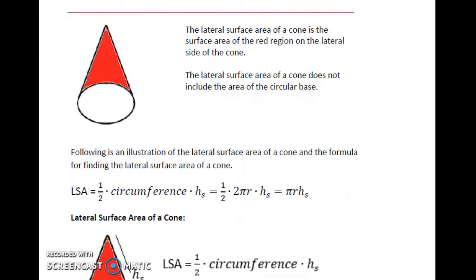The lateral surface area of a cone is the surface area of the red region on the lateral side of the cone. So it's this lateral side. It does not include the circular base of the cone.